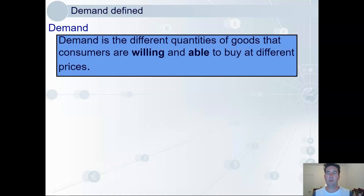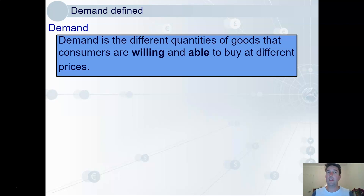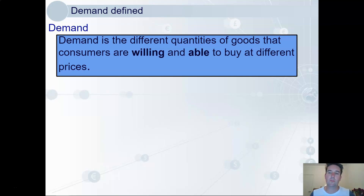Firstly, we will define demand: the quantities of goods or services that consumers are willing and able to buy at different prices. Both of these conditions — willingness and ability — must be met to truly demand something.